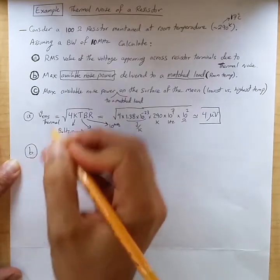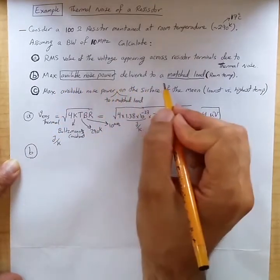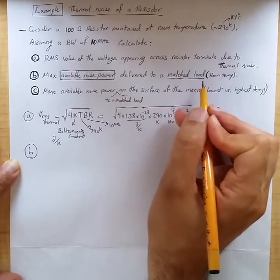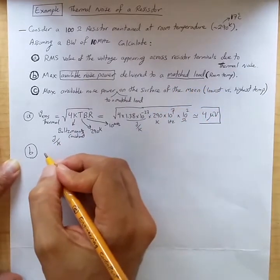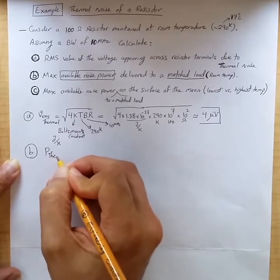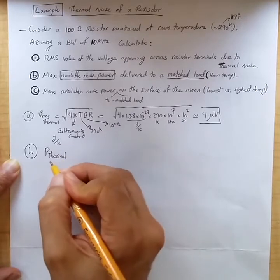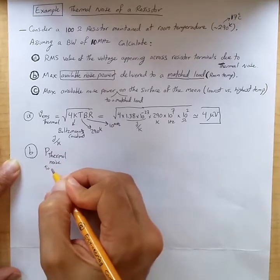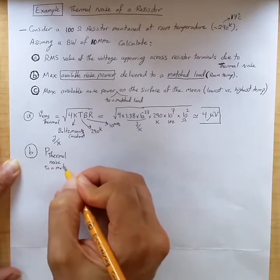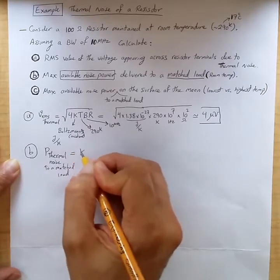Part B: compute maximum available noise power delivered to a matched load at room temperature. For that one, we know that available thermal noise power to a matched load is equal to KTB.